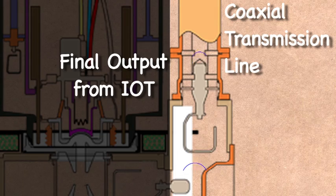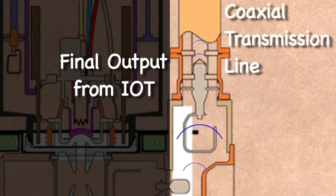Finally, a second probe extracts the RF energy from the secondary output cavity, and connects it to a coaxial transmission line, where the signal can be filtered, switched, and sent to the antenna for broadcast.